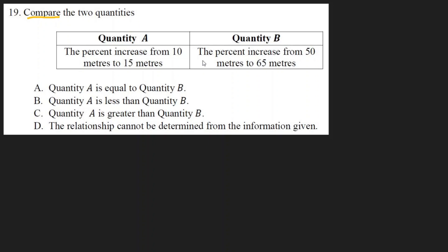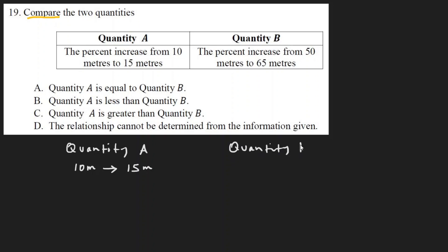This is a quantitative comparison problem. You need to compare quantity A and quantity B. Quantity A is the percent increase from 10 meters to 15 meters. Quantity B is the percent increase from 50 meters to 65 meters — find the percentage for each.